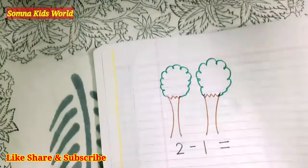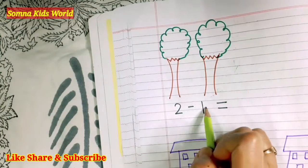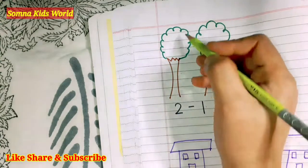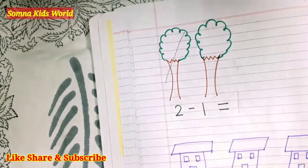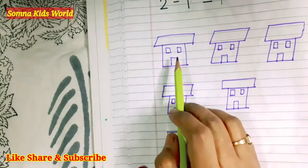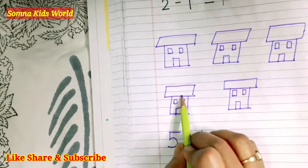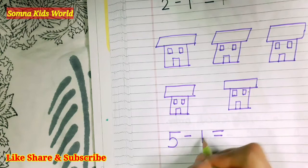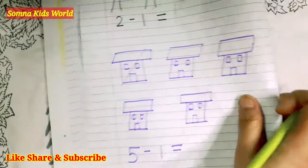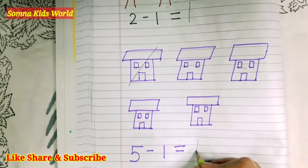We are having two trees, so two minus one — cut one tree. How many left? One — answer is one. Next, how many houses? Total five houses — one, two, three, four, five. Minus one house, so just cut one house. How many left? One, two, three, four — the answer is four.